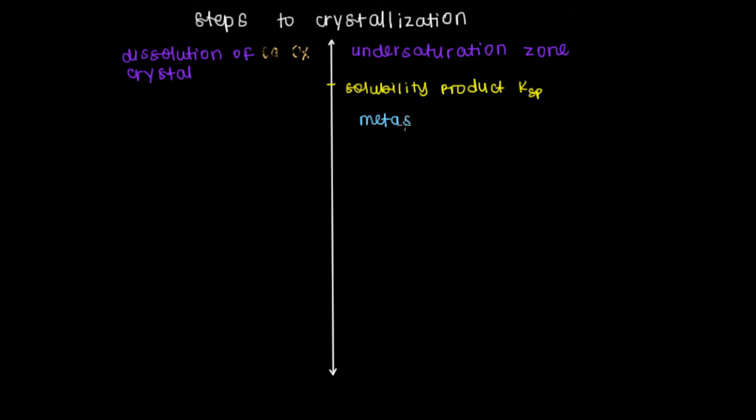This is the metastable zone, because we're not quite undersaturated and we're not yet oversaturated. We're in the middle, so we're meta. Which means that rather than the dissolution of our calcium oxalate crystal being more likely, here our calcium oxalate crystal has the potential to form. So what we have is the potential for calcium oxalate crystal formation. And because it's more likely for calcium oxalate to be formed here, I'll still draw it a little erased out, but less than above.